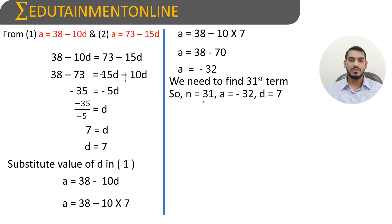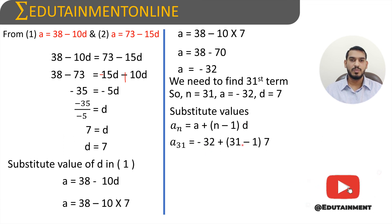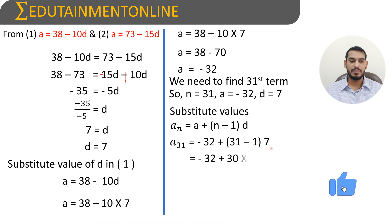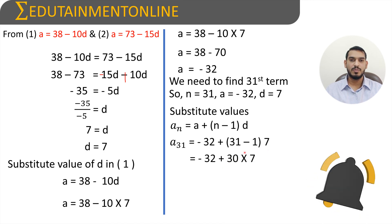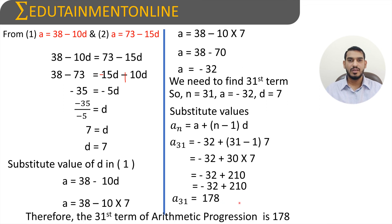Substituting n = 31, a = -32, and d = 7 into the formula a_n = a + (n - 1)d: a_31 = -32 + (31 - 1) × 7 = -32 + 30 × 7 = -32 + 210 = 178. Therefore, the 31st term of the arithmetic progression is 178.